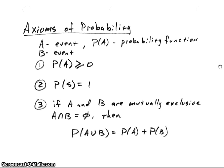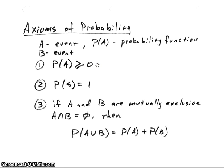There are really three axioms of probability. We have A as an event, B as also an event, and P of A as our probability function. The first axiom is that the probability of some event A will always be greater than or equal to zero — it can't be negative. The second is that the probability of our sample space is equal to one, since the sample space is everything, the probability that everything will occur is one. The third axiom is that if two events A and B are mutually exclusive — meaning their intersection is the null set — then the probability of A union B equals the probability of A plus the probability of B.